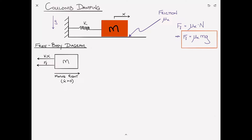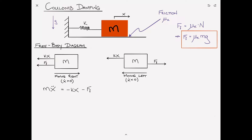When the block starts moving to the left, assuming it's still displaced in the positive direction, we have a spring force still applied to the left, but the frictional force is now applied to the right since the block is moving left. So we need to consider each of these two cases separately. For Case 1, where the block is moving to the right, we apply Newton's second law: MX double dot equals minus KX minus F sub F, because both forces point in the negative X direction.